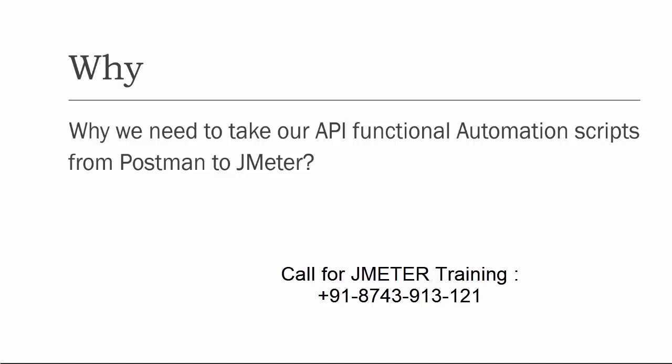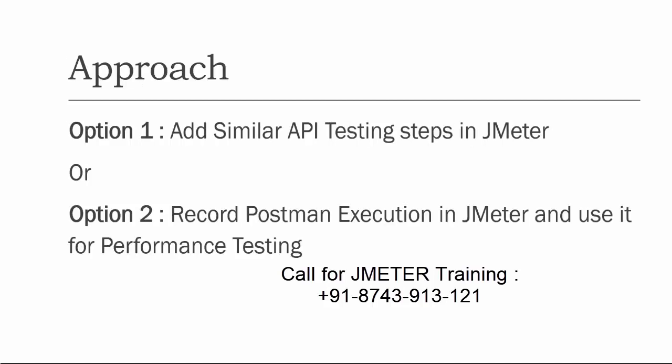Now I've been asked to do performance testing of the APIs for which we already created Postman test cases. How can we do that? In Postman we cannot do performance testing — it is only for functional testing. So for performance testing I want to go to JMeter. One approach is to write the API testing steps in JMeter again. But if you have hundreds of APIs and already written lots of test cases in Postman, you'd have to recreate all of them in JMeter. The other approach is to take these Postman test cases into JMeter.